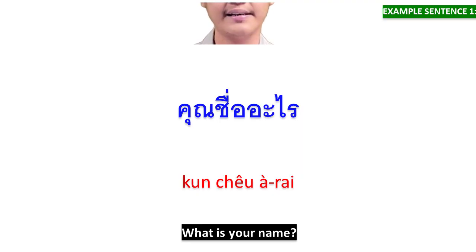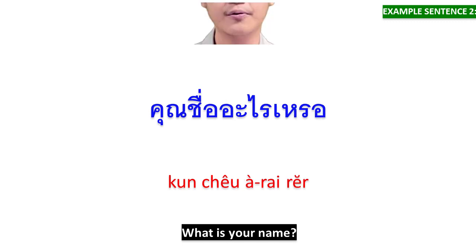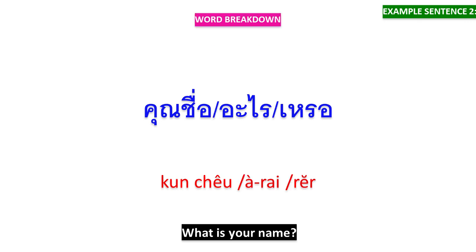คุณชื่ออะไร — คุณชื่อ means 'your name', อะไร means 'what is'. หรอ is a particle of this question. หรอ is used to make a question sound softer.